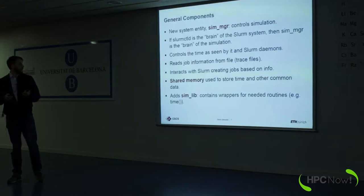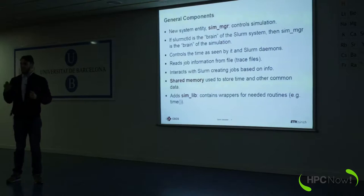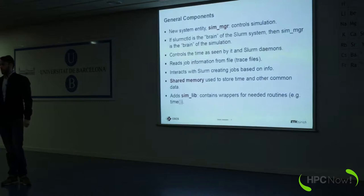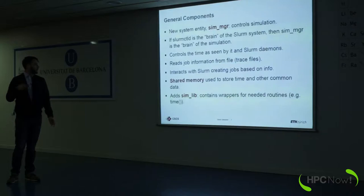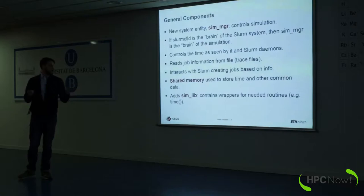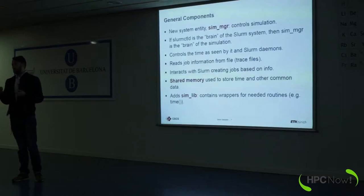Initially it reads a file called the trace file — a binary file where all the specifications about jobs are written: the job ID, when it was started, when it was ended, the number of nodes, threads per core, and all other Zrull information. It creates jobs based on this information and uses shared memory. In this shared memory, all the data regarding the simulation is written. The most important thing is the time of the simulation — the exact time where the simulation is at that moment.